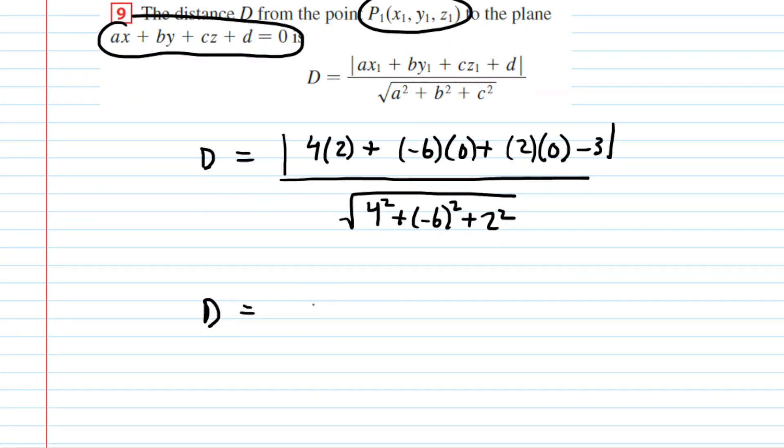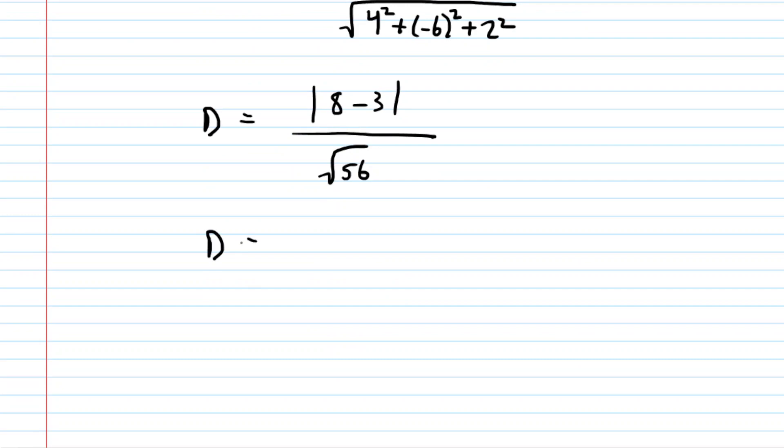If we do so inside the parentheses, we're going to have the absolute value of 8 minus 3. These all zero out. And then on the bottom, you're going to end up with the square root of 56. And so, our final answer would be simply 5 over the square root of 56.